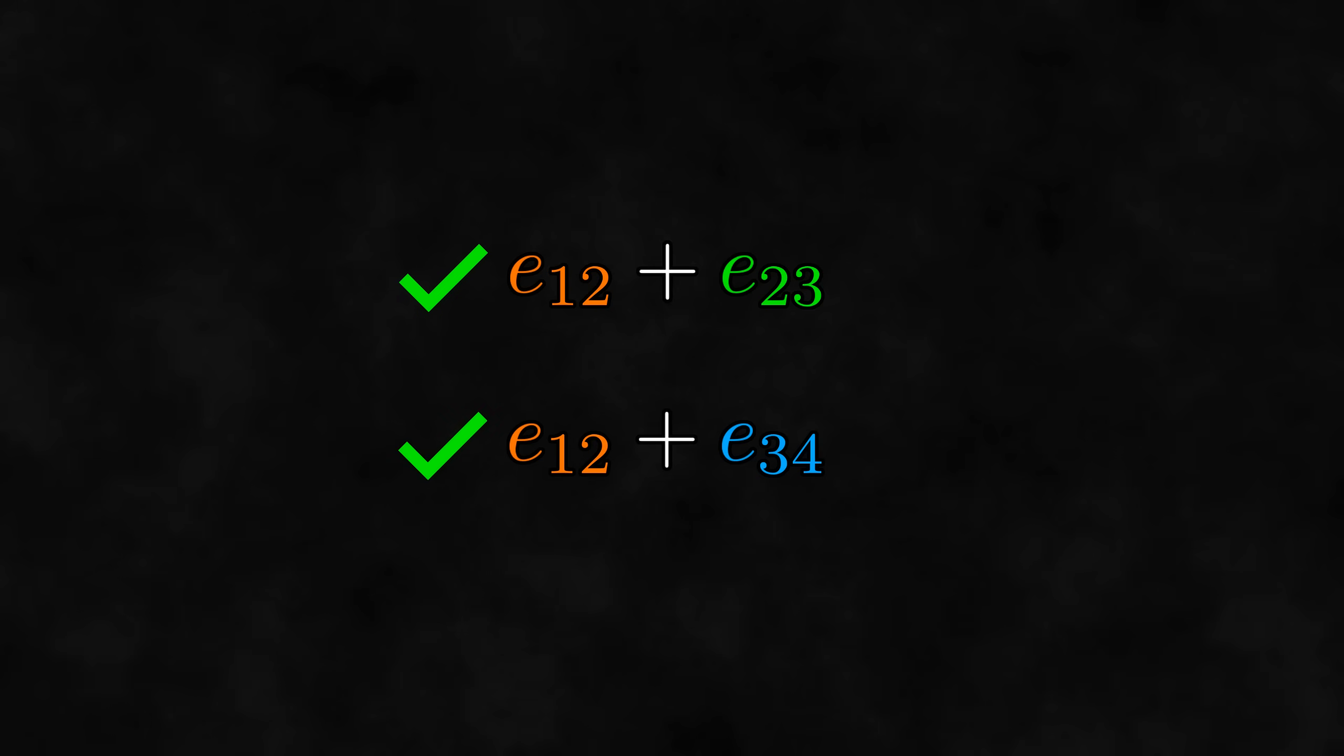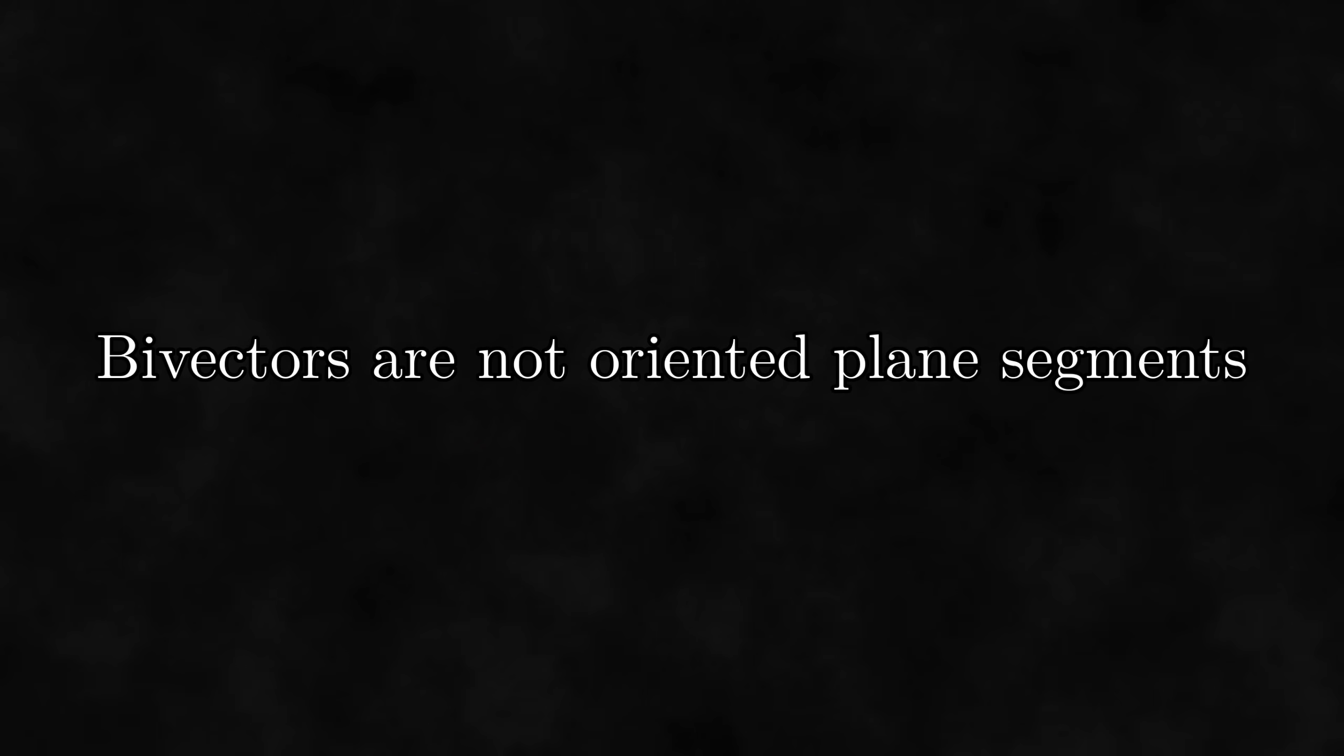Furthermore, adding two objects of the same type should produce another object of the same type, so we say that E12 plus E34 is a bivector. This means that contrary to what we have been saying until now, bivectors are not oriented plane segments.